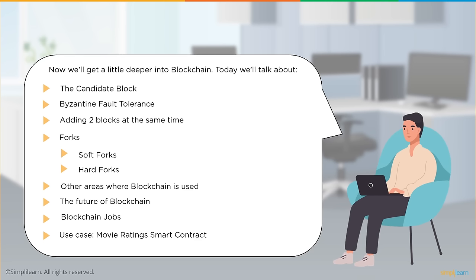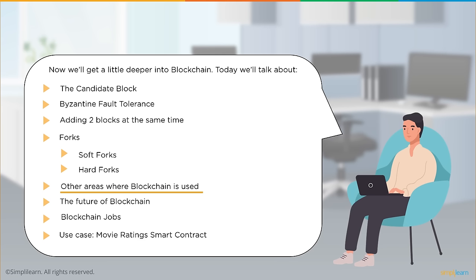Today's deeper topics include: what is a candidate block, Byzantine fault tolerance as an earlier consensus mechanism, how blockchain handles two blocks being added at the same time, the concept of forking — soft forks and hard forks — other areas where blockchain is being used, the future of blockchain, upcoming blockchain job profiles in the market, and finally a quick demo on how to create a smart contract and deploy it.